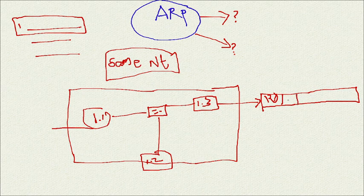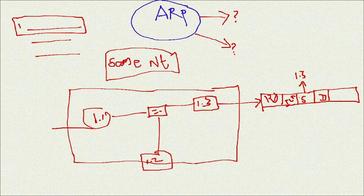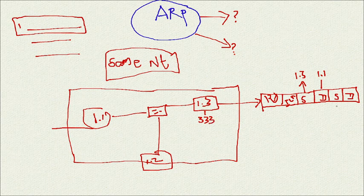The ping packet contains random data as payload, then ICMP - ICMP is the protocol of ping. Then the source IP is 1.3 and destination IP is 1.1. What is the source MAC? The PC initiating the request knows its own source MAC address, which is 3333.